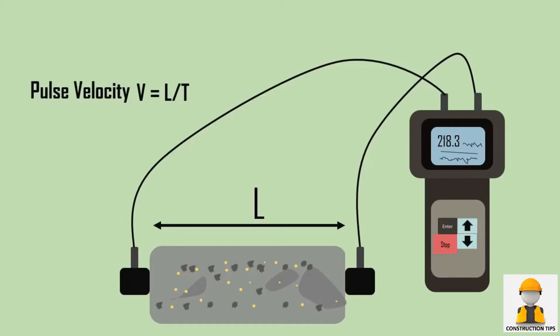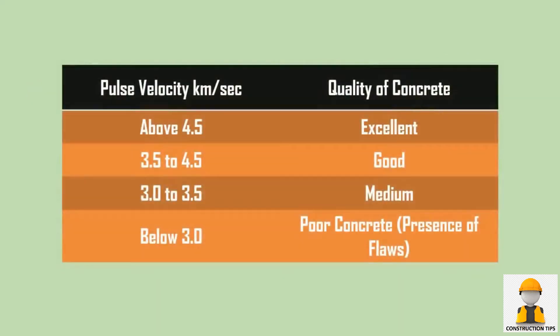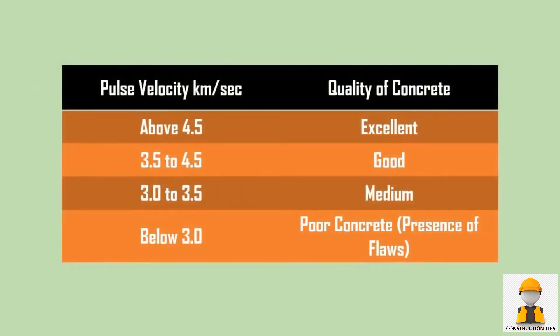The pulse velocity V is given by V equals L divided by T. Based on the velocity, the quality of concrete is identified with the help of the table shown on the screen.